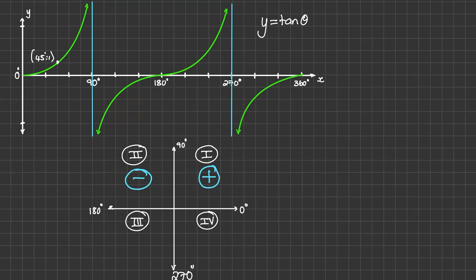But it flips back to positive in the third quadrant. So between 180 degrees and 270 degrees, we can see that tan of theta produces positive results. So tan theta is positive in the third quadrant.